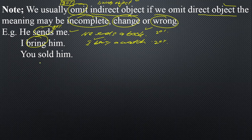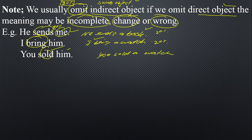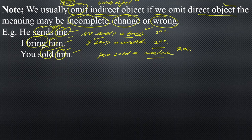Sometimes omitting the indirect object can even make the sentence wrong — for example, 'I sold him' makes it sound like you sold the person. So it is better to omit the indirect object. You should say 'You sold a watch,' which is correct, rather than 'You sold him.' So for learning mono transitive verbs, you need to watch the video about di-transitive verbs — it will be further clear for you. Hope you got today's lecture. Wish you best of luck, see you next time. Goodbye.